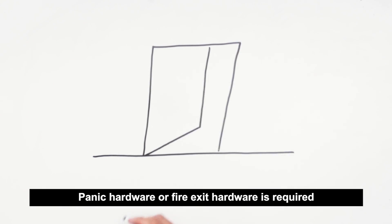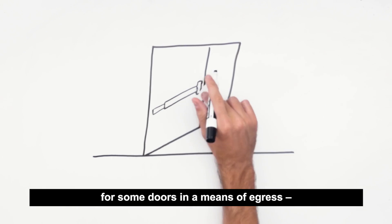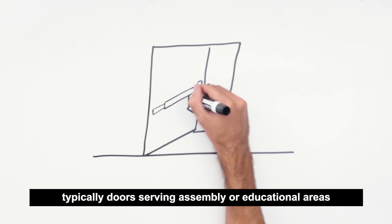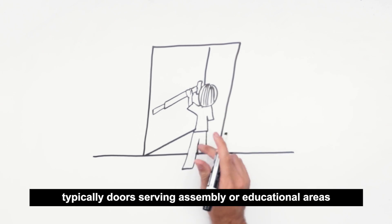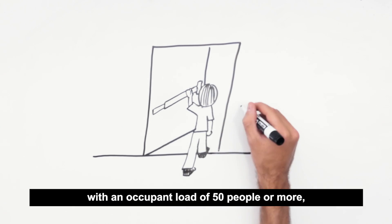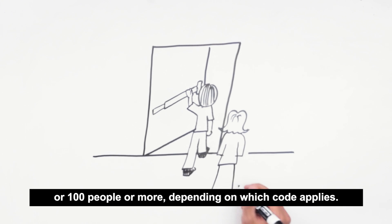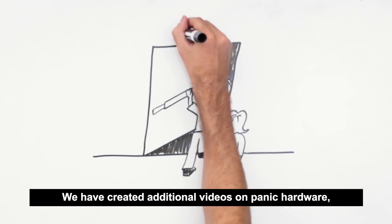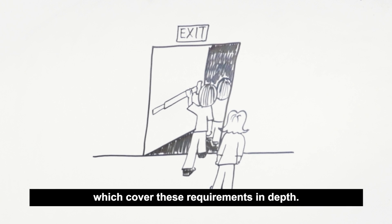Panic hardware or fire exit hardware is required for some doors in a means of egress. Typically doors serving assembly or educational areas with an occupant load of 50 people or more, or 100 people or more, depending on which code applies. We have created additional videos on panic hardware which cover these requirements in depth.